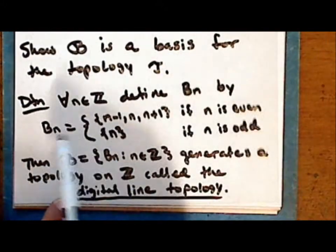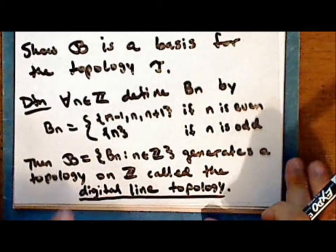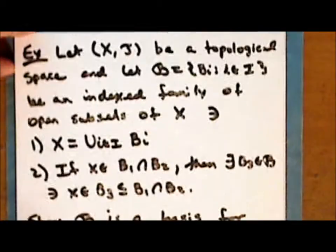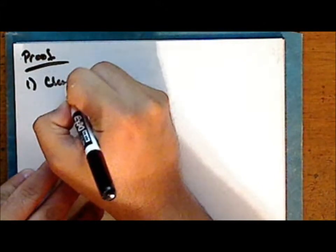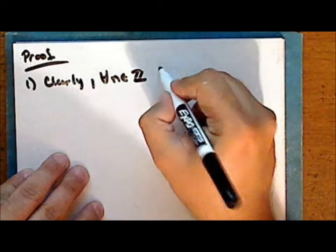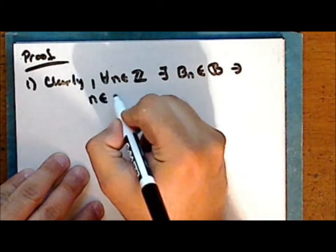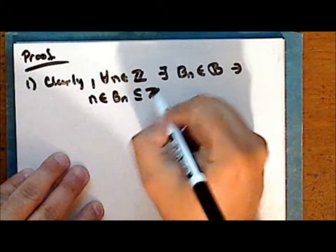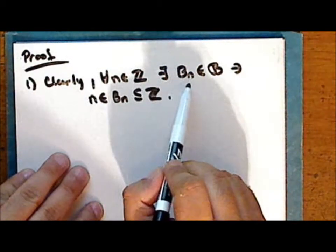We will now show that this collection script B satisfies the two conditions in the definition for a topology generated by a basis. First, clearly, for every integer n, there exists an element b sub n in the collection script B such that the integer n is in this element, which is a subset of the entire set of integers. That is, for every integer, there is at least one basis element containing it.